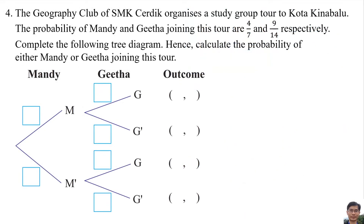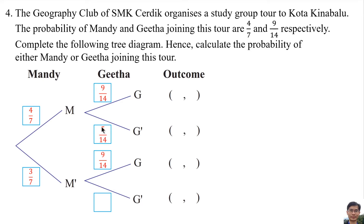Number 4. The geography club of SMK organized a study group tour to Kota Kinabalu. The probability of Mandy and Gita joining this tour are 4 over 7 and 9 over 14 respectively. Complete the tree diagram. The probability of Mandy joining is 4 over 7, and the probability of Mandy not joining is 1 minus 4 over 7, which equals 3 over 7. The probability of Gita not joining is 1 minus 9 over 14, which equals 5 over 14.